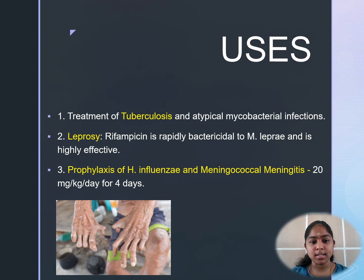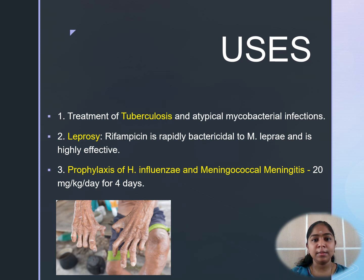Uses of Rifampicin include treatment of tuberculosis and atypical mycobacterial infections. For leprosy, Rifampicin is rapidly bactericidal to Mycobacterium leprae and is highly effective; it is used in combination with Dapsone, which shortens the duration of treatment. When given alone, it develops resistance. For prophylaxis of Haemophilus influenzae and meningococcal meningitis in close contacts, particularly children, 20 mg/kg for 4 days is given.